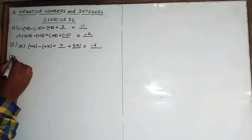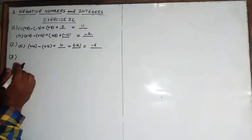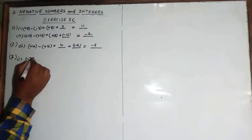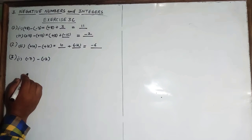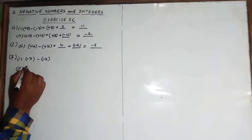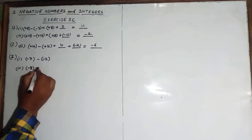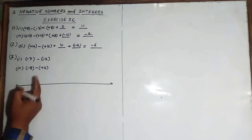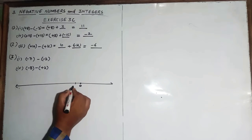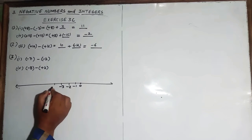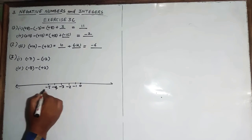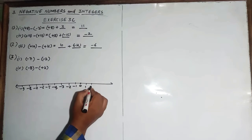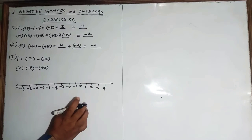Question number three: subtract each of the following using the number line. First part is minus 7 minus minus 2, and the fourth part is minus 8 minus plus 2. Using the number line you will subtract. From 0 I will write minus 1, minus 2, minus 3, minus 4, minus 5, minus 6, minus 7, minus 8, minus 9 on the left, and 1, 2, 3, 4 on the positive side. This is our number line.